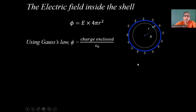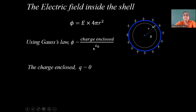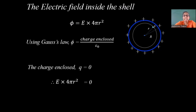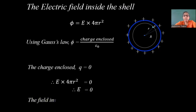The charge enclosed inside this Gaussian surface is 0, because the charge resides on the shell which is outside the Gaussian surface. Therefore, using Gauss's law, the flux coming out is 0. So E into 4 pi r squared equals 0. Hence, the electric field inside a thin charged spherical shell is 0.